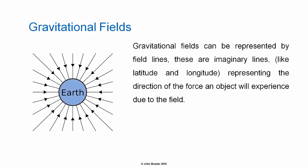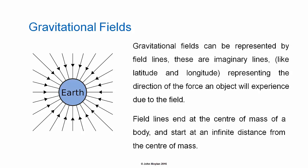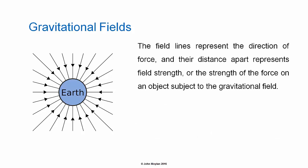Gravitational fields can be represented or mapped using field lines. These are imaginary lines, a bit like latitude and longitude on the surface of the Earth, and they represent the direction of the force on a mass subjected to that gravitational field. You can think in terms of a one kilogram test mass as the simplest example. Field lines end at the center of mass of a body and start at an infinite distance from the center of mass — in other words, the field lines continue from infinity to the center of mass. The field lines represent the direction of the force on an object, and the distance apart of the field lines represents the strength of the force.